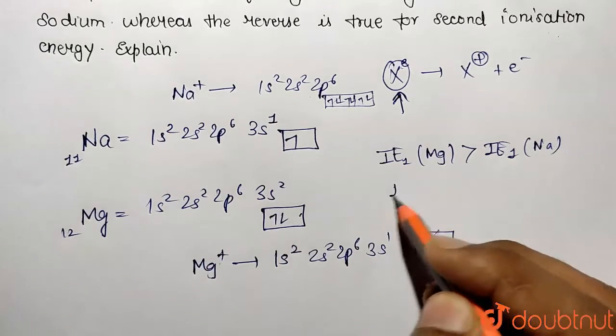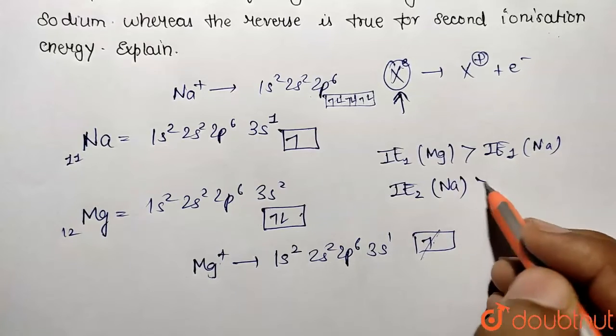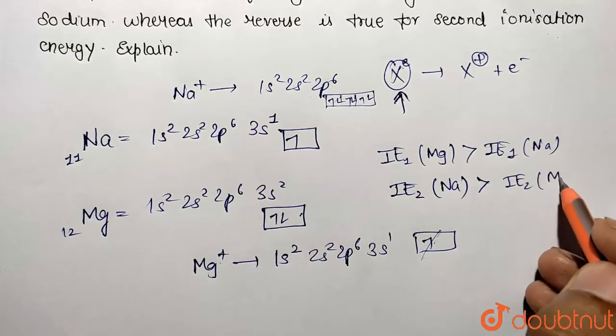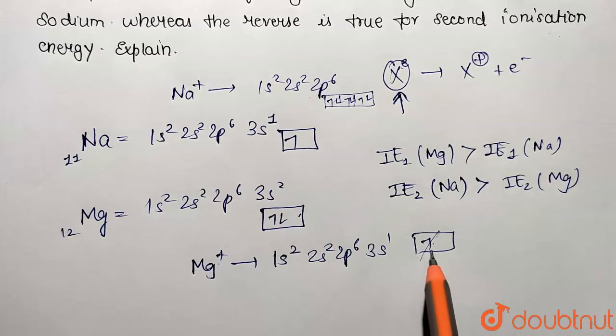That means second ionization energy of sodium is going to be more than of magnesium. So we can conclude over here, this IE2 value of sodium is greater than IE2 value of magnesium. The reason we have already seen here, it's going to be stable configuration, here it's going to be removing one electron easily. So this was the solution.